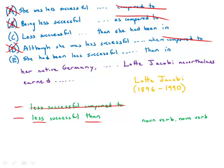In choices C and E, we have two different structures. In C, we just have 'less successful' — basically a whole clause revolving around this adjective: 'less successful than she had been.' Versus E, which has a full subject and verb: 'she had been' — subject, verb — 'she had been less successful than...'